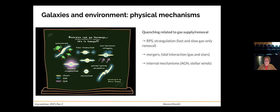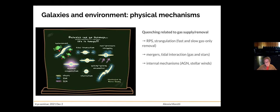Other things can happen in dense environments, such as mergers and tidal interactions that can lead to quenching, but these mechanisms are thought to be less efficient in clusters because galaxies move too fast. There are also internal mechanisms that can lead to quenching — AGN and stellar winds — which are thought to be effective only in some part of the galaxies.